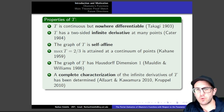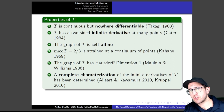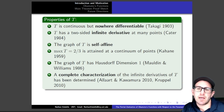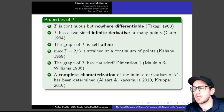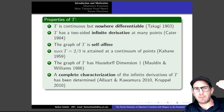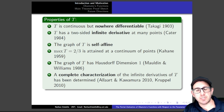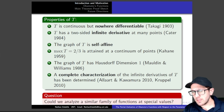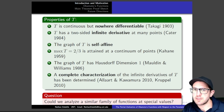We know a lot of things about Takagi's nowhere differentiable function: it's nowhere differentiable, we know things about its infinite derivatives, we know it's self-affine, we know it attains its maximum at a very large number of points, we know its Hausdorff dimension, and there's a complete characterization of its infinite derivatives. Because we have this roadmap of analysis for the partial derivative of parameterized families like Lebesgue singular function, we can ask: could we analyze a similar family of functions at similarly special values?